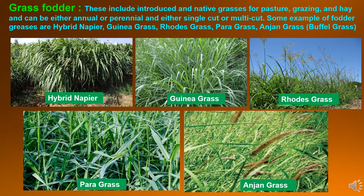Grass fodder: These include introduced and native grasses for pasture, grazing and hay and can be either annual or perennial and either single cut or multi-cut. Some examples of fodder grasses are hybrid napier, guinea grass, rhodes grass, paragrass and anjan grass which is also known as buffalo grass.